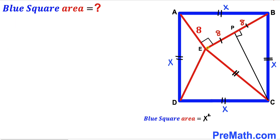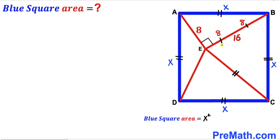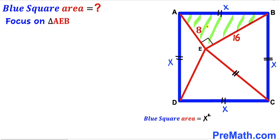Since EP equals BP and BP equals 8 units, EP also equals 8 units. Therefore the whole length EB equals EP plus BP, which is 8 plus 8, giving EB equals 16 units.